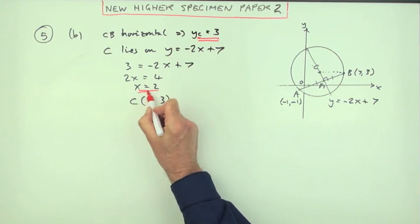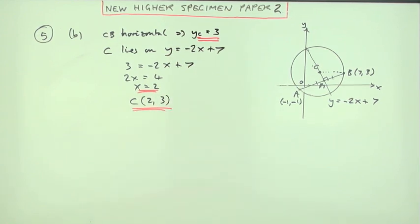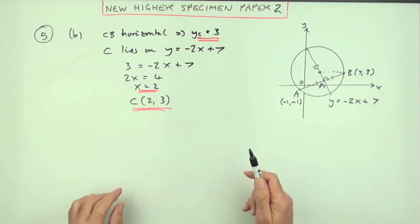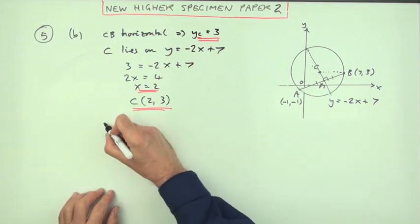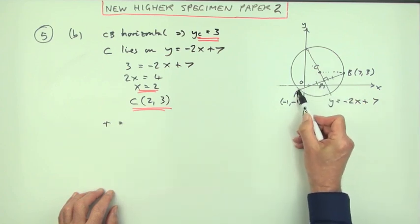Now I've got the center of the circle. One other thing needed for a circle is what's its radius. So the radius will be the distance from C to A or the distance from C to B.